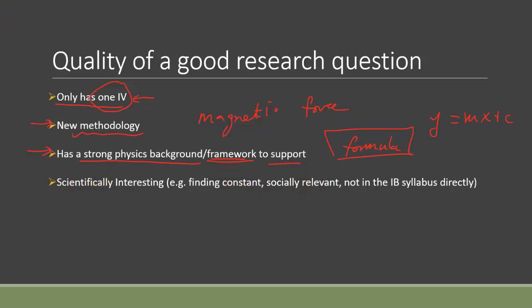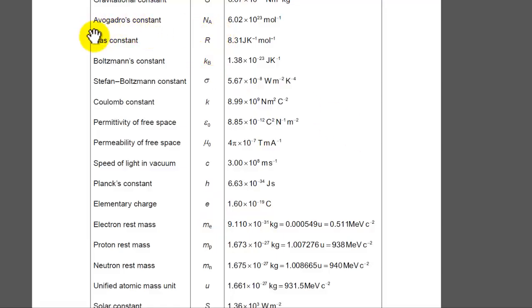And lastly it may be also good if you can make it more scientifically interesting if you want to get the highest span in the personal engagement. One way is to find the constant that we learned in physics. For gravitational constant that may be too hard but if you can try to look for things like the gas constant, coulomb constant, permeability of free space, those are something that you could work on and it could be quite interesting too.